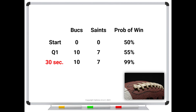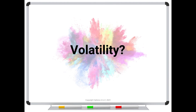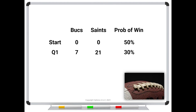Once you understand how probabilities are affected by time, what about volatility? It's exactly the same thing. Changing volatility is almost the same as changing time — they are two different ways of increasing the potential range of stock prices. Going back to the Bucks and Saints game: at the end of the first quarter it's 7-21, the Bucks are losing, and you've dropped your probability from 50% to 30%. But now suppose there's an increase in volatility — meaning there's a better chance for both teams to score.